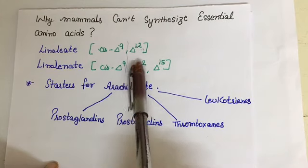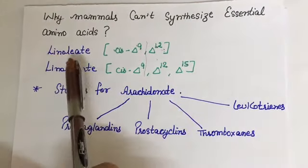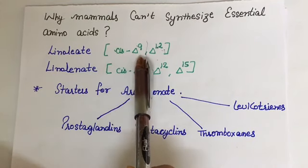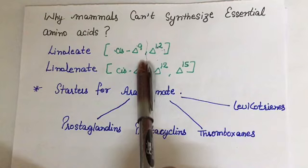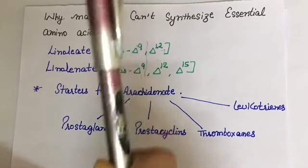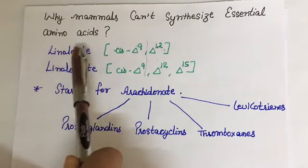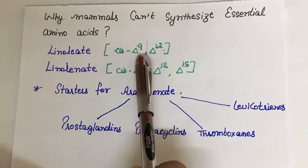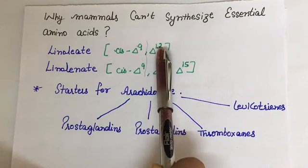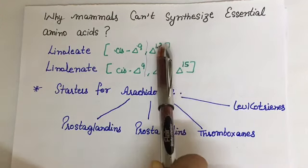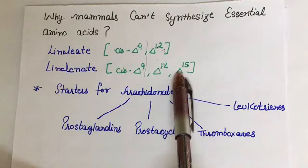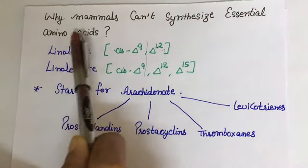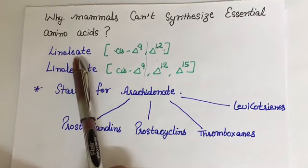Mammals lack the enzymes needed to insert double bonds at carbon atoms beyond 9. So linoleate and linolenate have double bonds beyond carbon number 9 - that is 12 in linoleate, and 12 and 15 in linolenate. This is why mammals cannot synthesize these essential fatty acids: they don't have the enzyme needed to insert double bonds beyond carbon number 9.